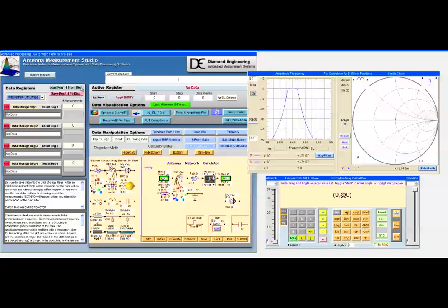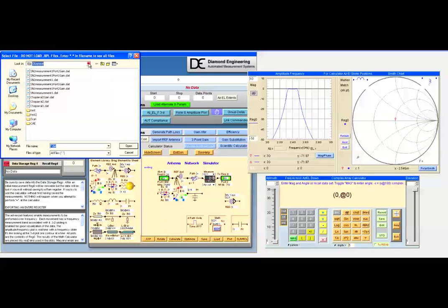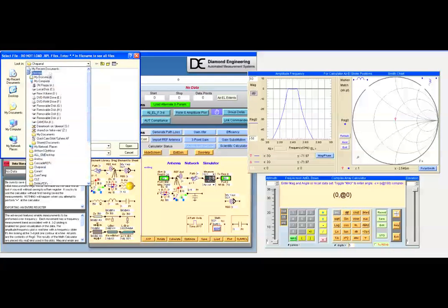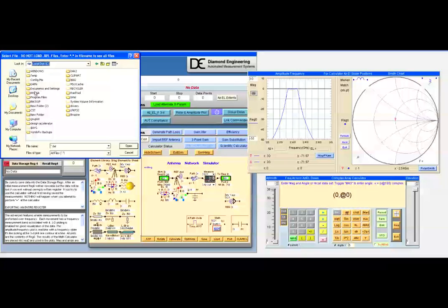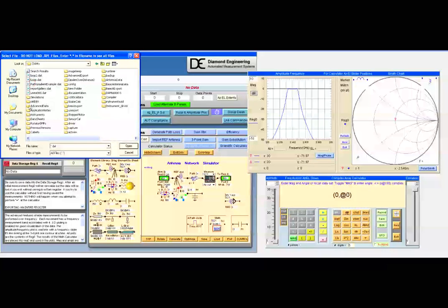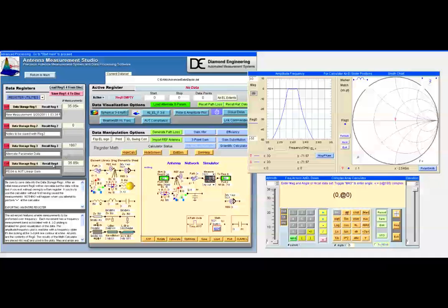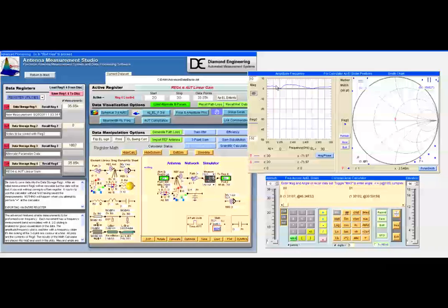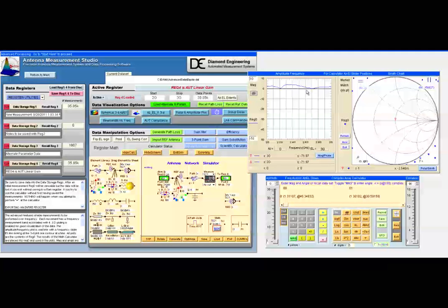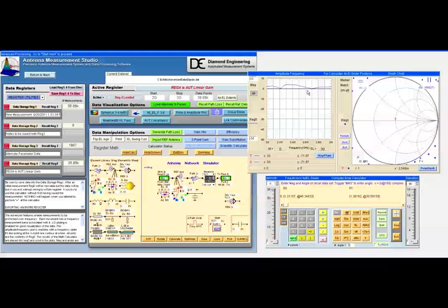I'm going to load the dipole data in the CDAMS advanced data directory, dipole.dat, and I'm going to recall a previously processed gain set from reg 4. Immediately, it goes into reg 0 and we see that we have a measured gain pattern.